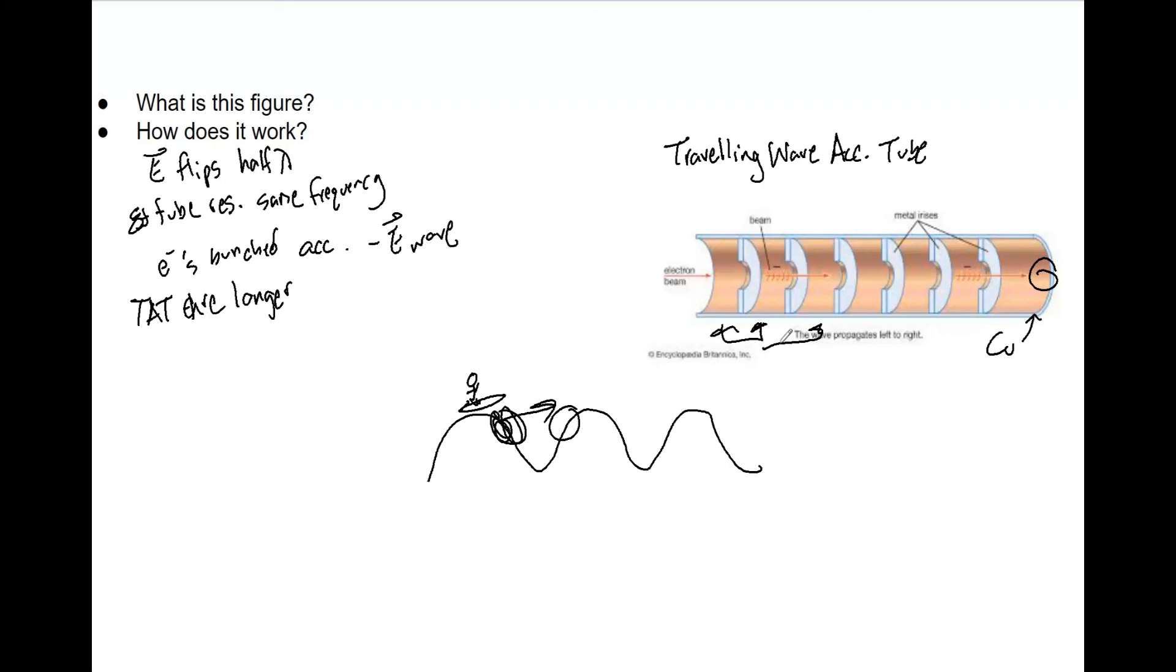The electric field reverses every half cycle, so there are four cavities per wavelength. It's really important to know the main differences between traveling wave and standing wave accelerator tubes. Know that normally we use standing wave because they are shorter - we want less room in the treatment area to be taken up. That also allows you to have a smaller head and more clearance.